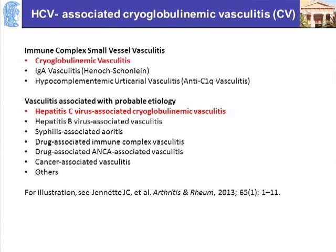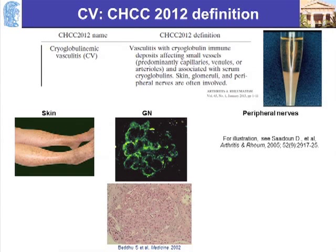Cryoglobulinemic vasculitis is in the group of small vessel immune complex-mediated vasculitis. If you subdivide them further, this is a vasculitis with a probable etiology, which is obviously the virus itself. There are three main target organs: the skin, the glomeruli, and the peripheral nerves. The disease is diagnosed with the detection of cryoglobulins in the serum.